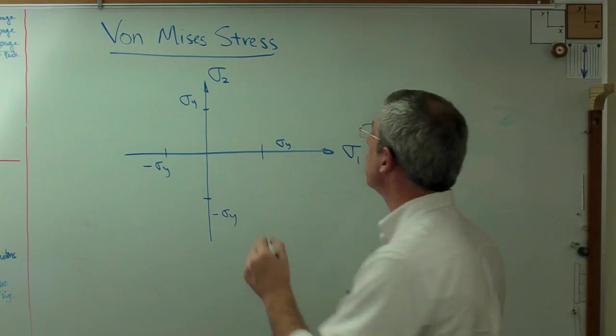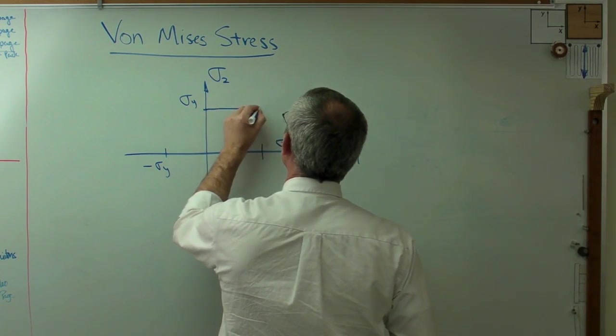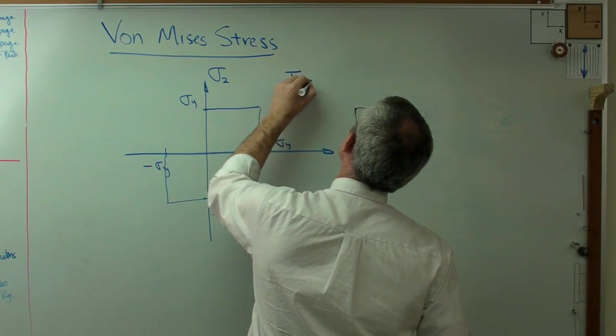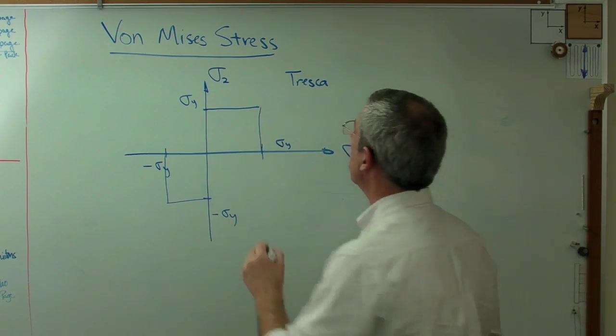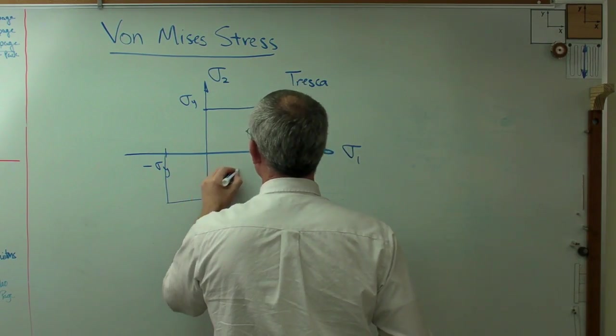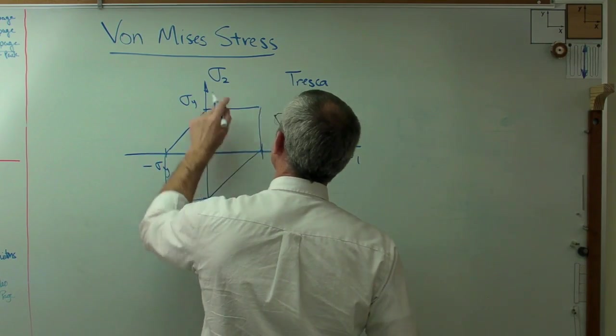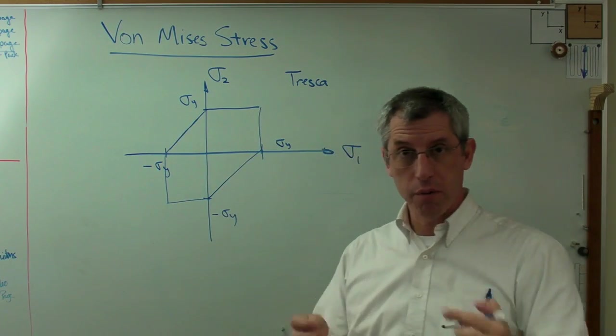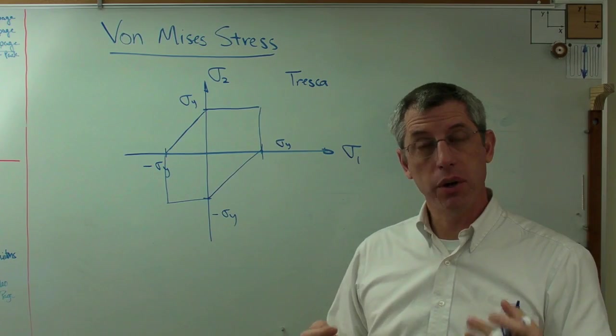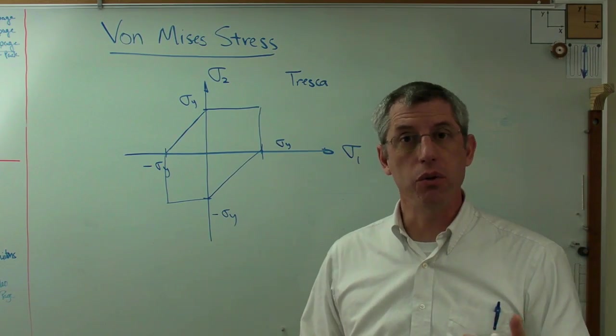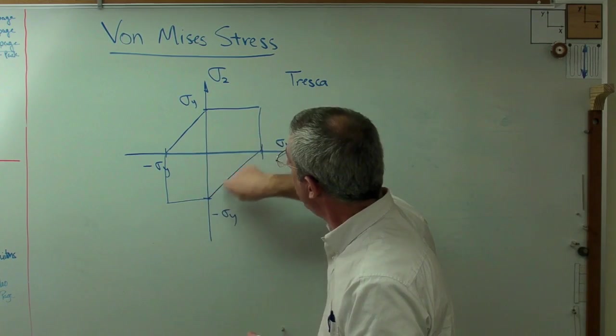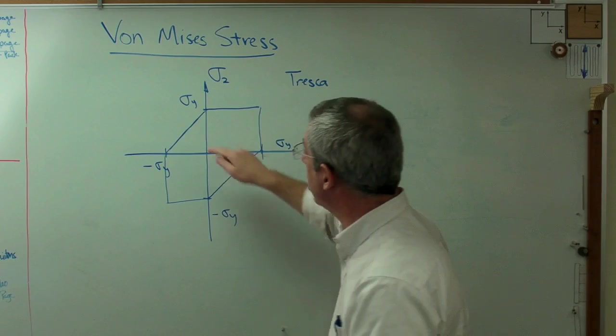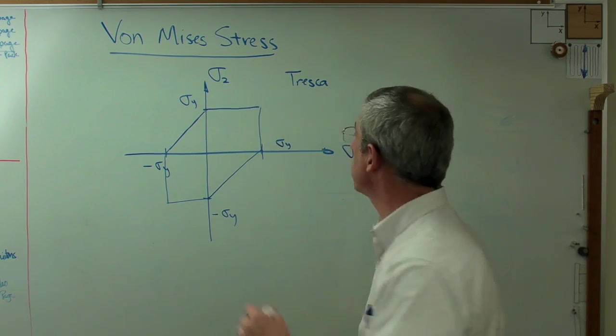Well, there are more sophisticated failure theories than that. The next most sophisticated one is called the Tresca, named after the person who thought of it. The Tresca theory draws a polygon, a hexagon. As long as, when you have a planar stress problem, you calculate the principal stresses, sigma 1 and sigma 2, using Mohr's circle, and you plot it. And if it lies inside that hexagon, you have not experienced yield. If it lies outside this hexagon, you have experienced yield. It's that simple.